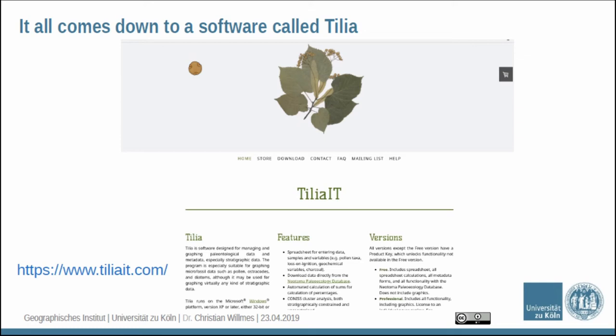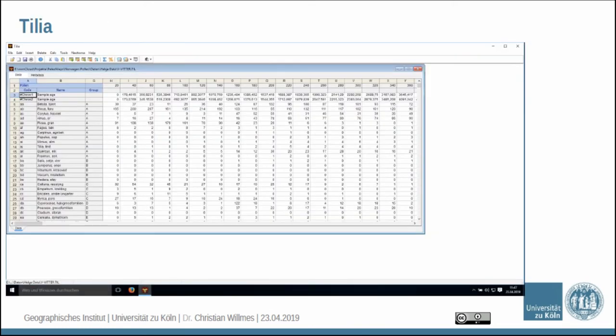It would be good if they could define an open interchange format. This is what the software looks like — you have spreadsheets in which you organize your data. You have information about the depths in the core, different taxa, and in this case two age models. For each depth step you have a computed or assigned age. And then you have the different counts of the different pollen taxa. It's not too complex for describing this data.